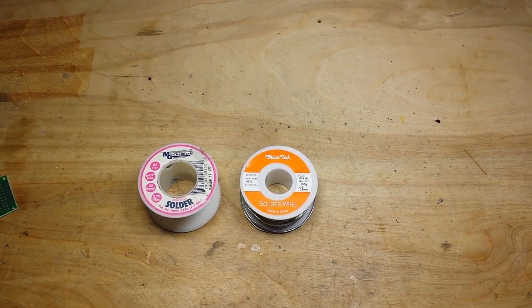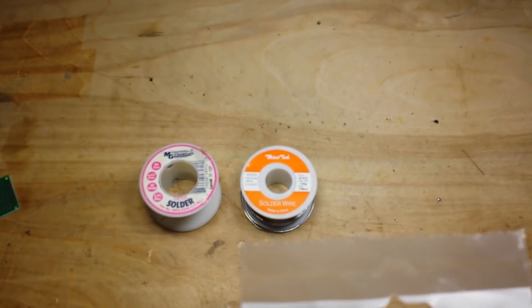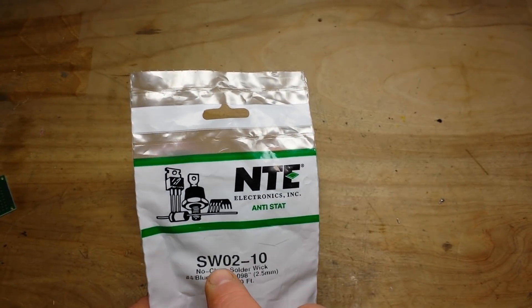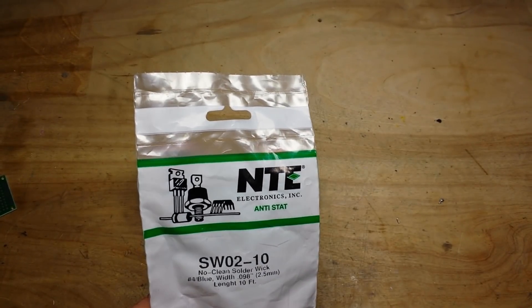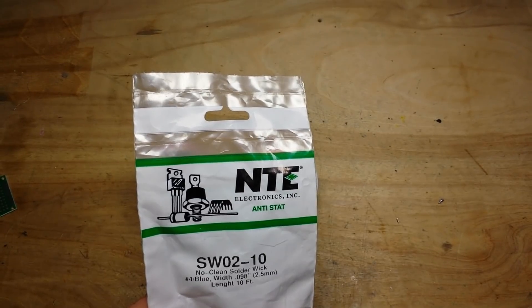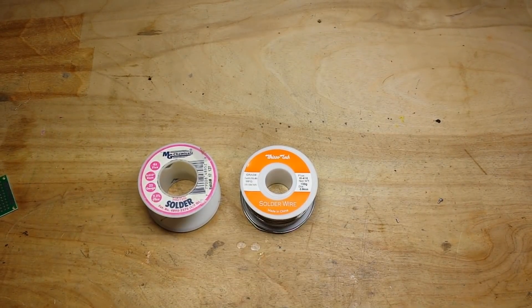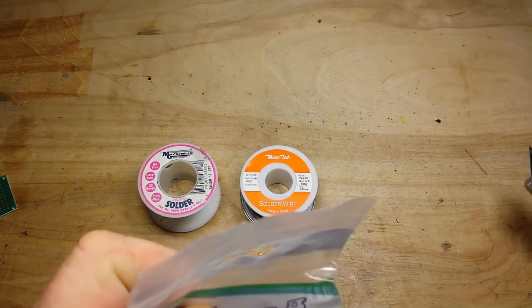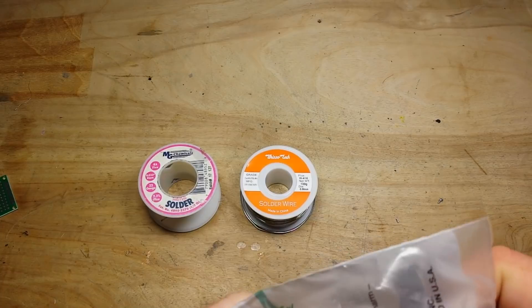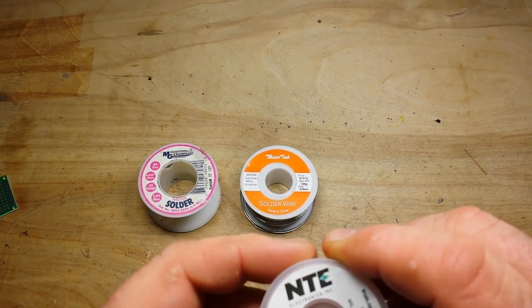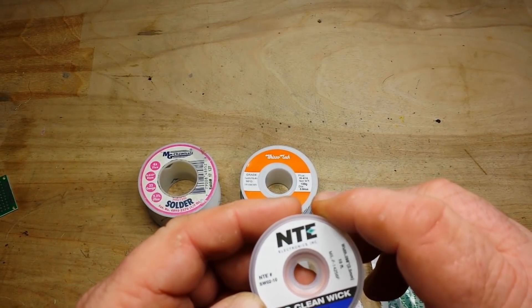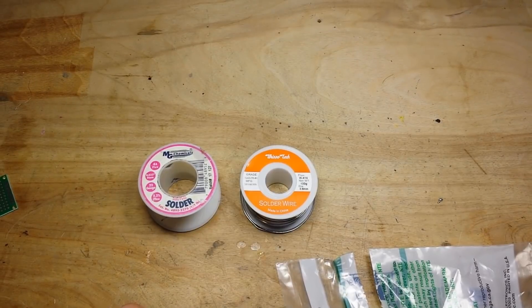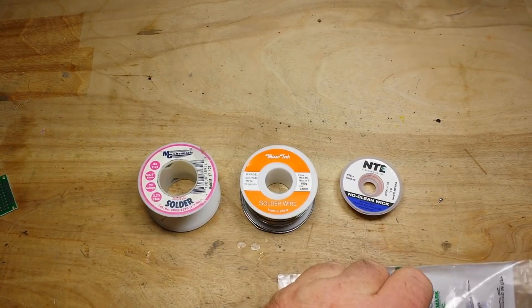But then I thought, well, let's try some other stuff while we're at it. For desoldering braid I normally use Gotowick, but I thought we'd try something different. This is from NTE Electronics, SW02-10 no clean solder wick number four blue with 0.098 inch, 2.5 millimeter, length is 10 feet. We'll see if it's got flux in it. If not, we'll add some flux.